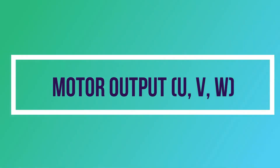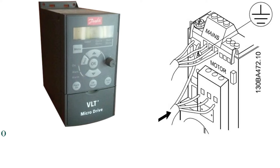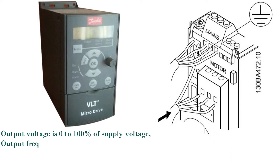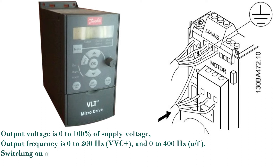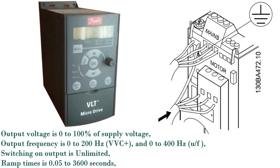Main menu button is used for access to all parameters. Motor output terminals U, V, W: output voltage is 0 to 100% of supply voltage. Output frequency is 0 to 200 Hz (VVC plus) and 0 to 400 Hz (U/F). Switching on output is unlimited. Ramp times are 0.05 to 3,600 seconds.